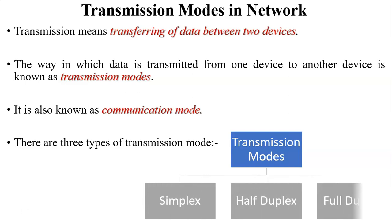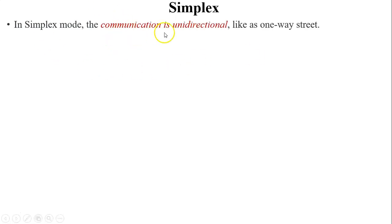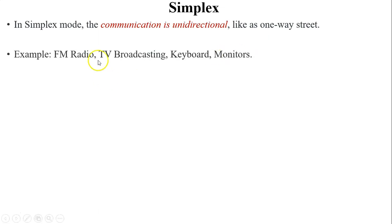There are three different types of transmission modes: the first one is simplex mode, the second one is half duplex mode, and the third one is full duplex mode. In simplex mode, data is transferred in only one direction, so communication is unidirectional — like a one-way street. For example, two PCs communicating using simplex mode: one is the sender and the other is the receiver.